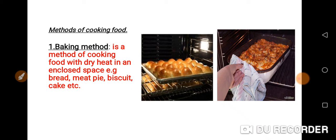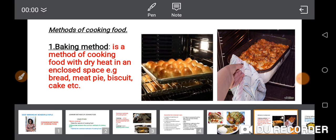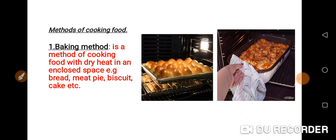The oven is an enclosed space, and it is with the help of the heat that the food cooks. If you want to bake any food, you make sure you turn on your oven and preheat it before the food is put inside. It is the hotness of the air in the oven that cooks the food. So baking method is a method of cooking food with dry heat in an enclosed space.